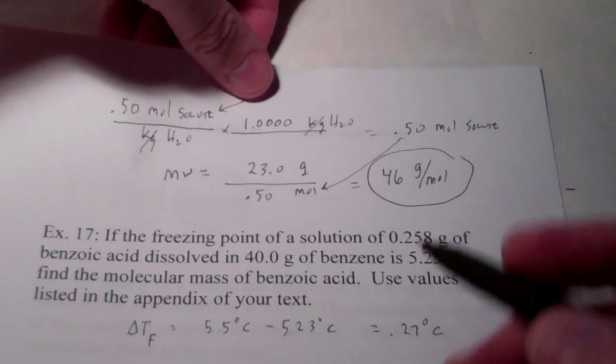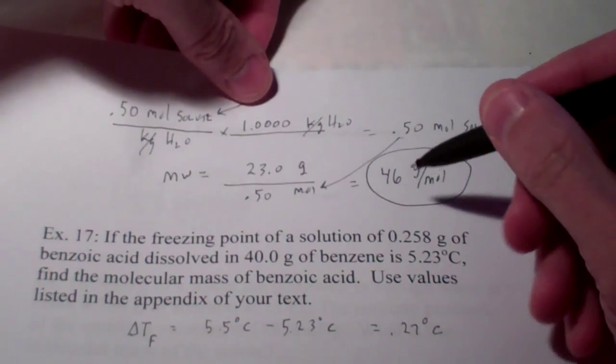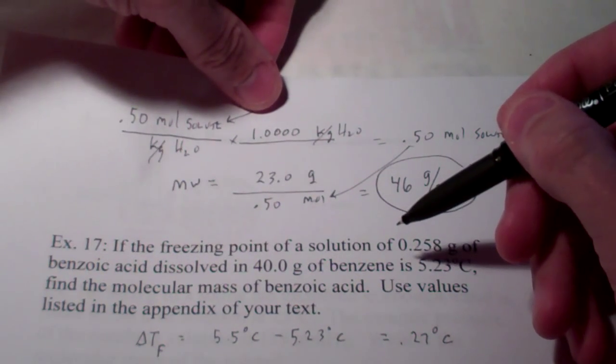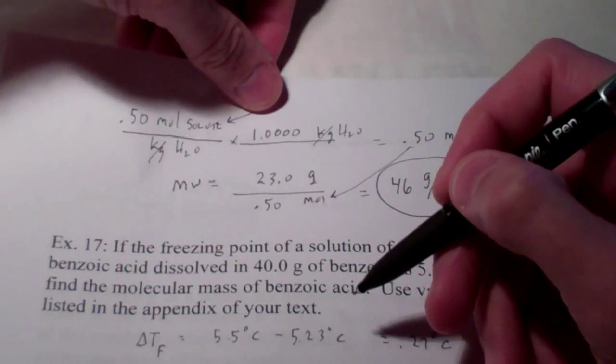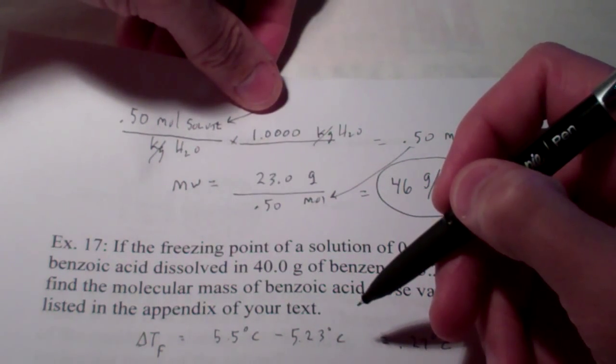Alrighty, let's continue with our colligative property discussion. As you recall, we just wrapped up with three colligative properties. We talked about vapor pressure lowering, freezing point depression, and boiling point elevation.